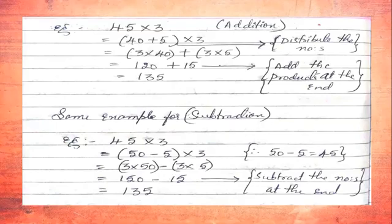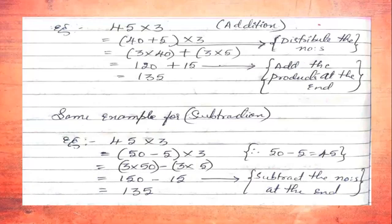We subtract the numbers at the end. After multiplying we got the products, now we subtract: 150 − 15 = 135. For addition we got 135, and for subtraction we also get 135, because we took the same example. For addition 45 was distributed as 40 + 5; for subtraction as 50 − 5. This was the distribution of numbers property.